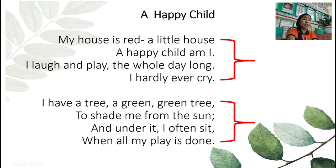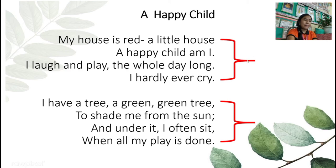We have here an example of a poem entitled "A Happy Child." My house is red, a little house. A happy child am I. I love and play the hoolay along. I hardly ever cry. I have a tree, a green, green tree, to shade me from the sun. And under it, I often sit when all my play is done. As you can see, these four lines here is what we call stanza. This is the first stanza. This is the second stanza.